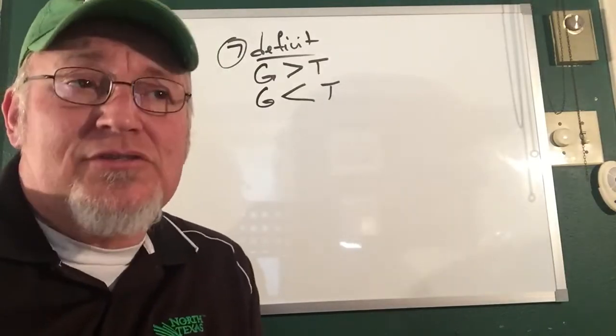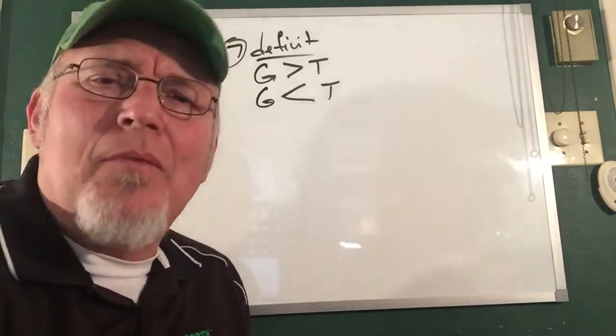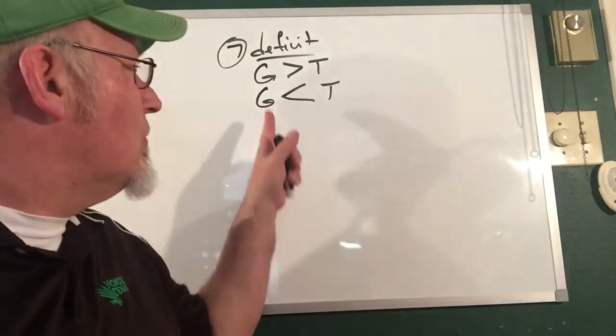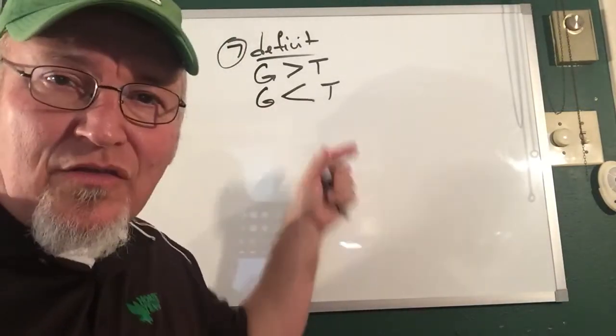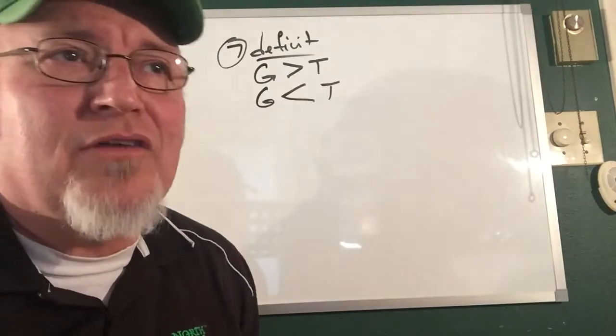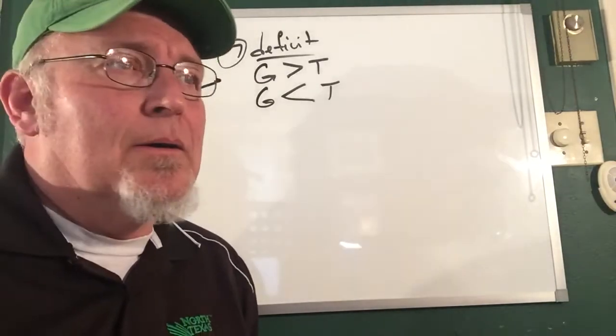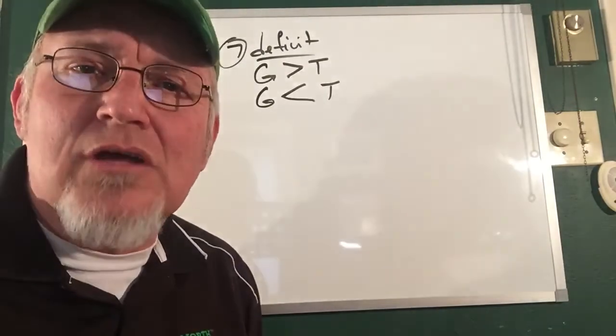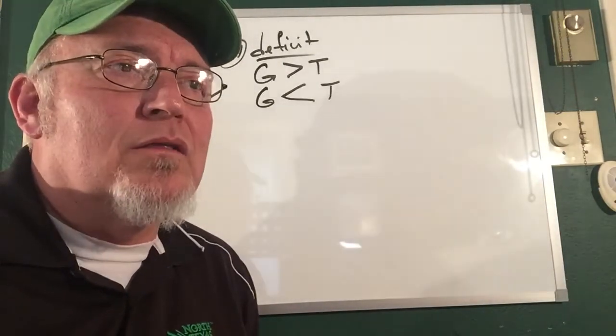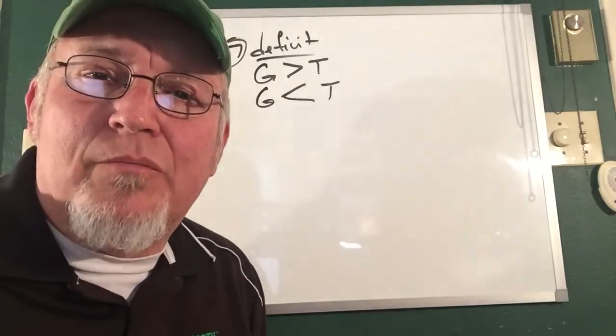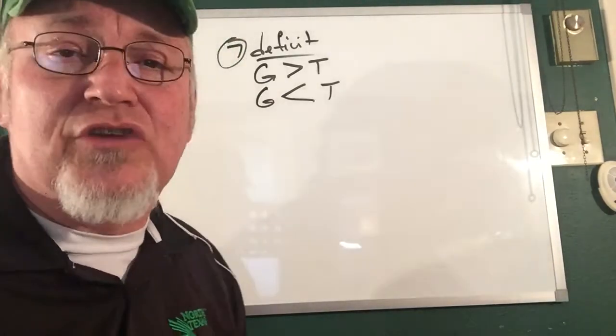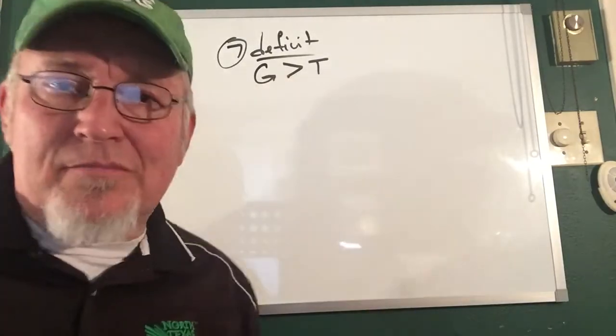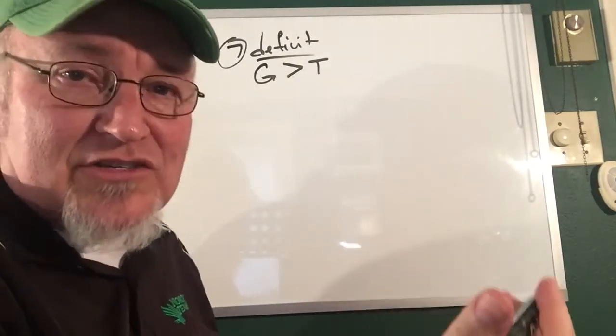The last time I believe that the federal government ran a budget surplus, where the spending was less than the tax receipts, would have been in the late 90s, early 2000s under the very end of the Clinton administration and the beginning of President George W Bush's administration. There was a surplus.